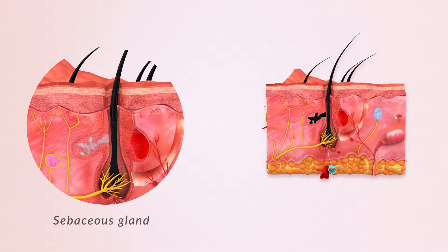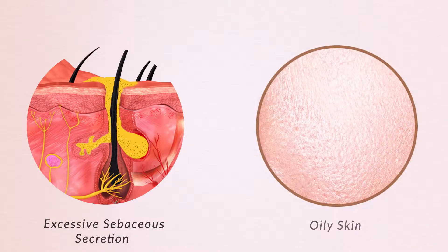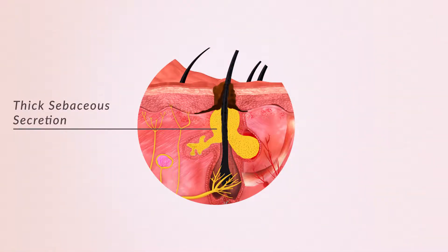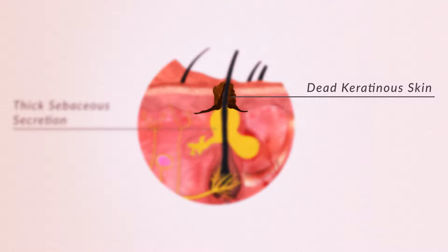What is that black spot? That is a sebaceous gland which is secreting oily secretion on the face. If the sebaceous secretion is too much, that can give rise to oiliness of the skin. If the sebaceous secretion becomes thicker, it doesn't come out of the follicle — it becomes a blockage. Along with that, there is dead keratinous skin, and that dead keratinous tissue becomes blackish in discoloration.